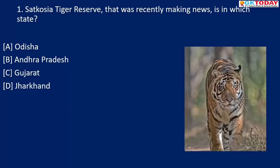The first question: Satkosia Tiger Reserve that was recently making news is in which state? This Tiger Reserve lies in the state of Odisha. It's in news because two highly decomposed elephant carcasses were recently discovered here. The reserve is situated in Odisha, spanning across four districts: Angul, Cuttack, Baud, and Nayagarh.